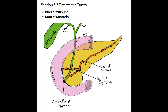Section 5.3, Pancreatic Ducts. There are two ducts in the pancreas that we need to know about. The first one is the duct of Wirsung, and the second one is the duct of Santorini. The duct of Wirsung is also known as our main pancreatic duct, and it runs all the way from the tail down through the body into the head, joins up with the common bile duct, and then enters through the ampulla of Vater into the duodenum.